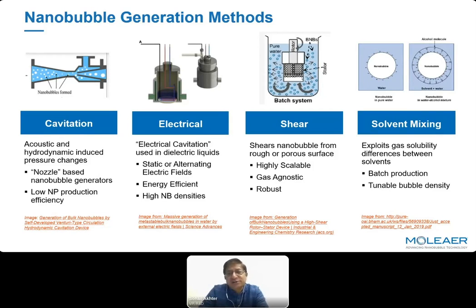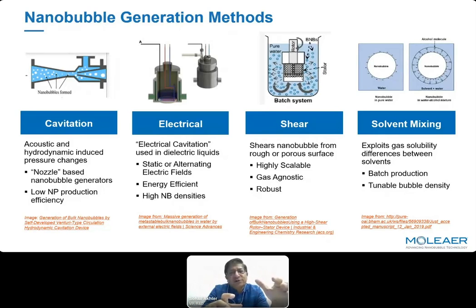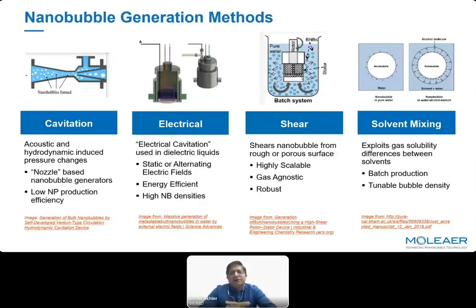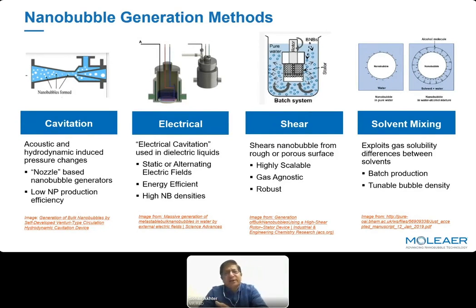If nanobubbles are what you need, you use certain methods. If microbubbles — sizes in the micron range — are what you're interested in, then you use other methods. The cavitation or venturi method, for example, can create a lot of microbubbles. A lot of people are developing all kinds of methods, including combination methods. The whole world of nanobubble production is getting very rich, but in the end, when it comes to applications, you have to look at the pros and cons of what works best.